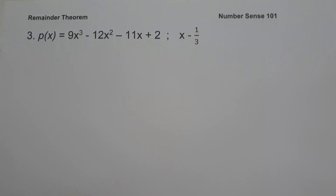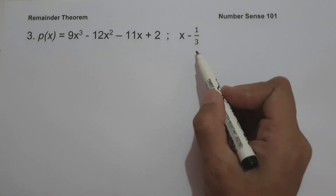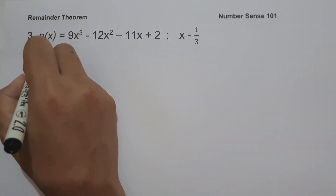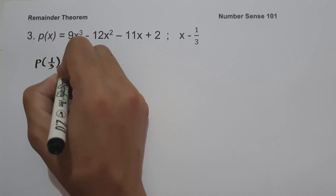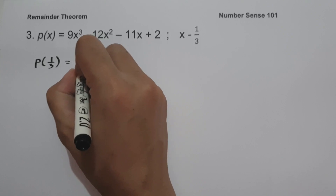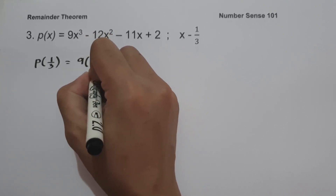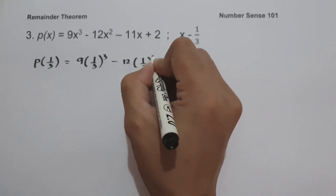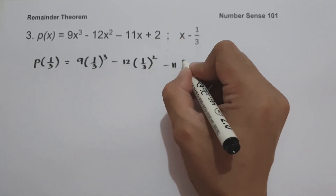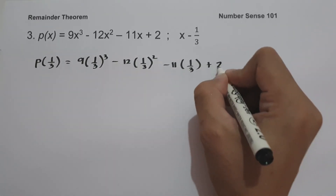On example number 3, we have p of x equals 9x cubed minus 12x squared minus 11x plus 2, and our divisor is x minus 1/3. Since our constant is negative 1/3, we take the opposite sign, which is positive 1/3. Let us substitute 1/3 to the value of x: 9 times (1/3) raised to 3, minus 12 times (1/3) raised to 2, minus 11 times 1/3, plus 2.